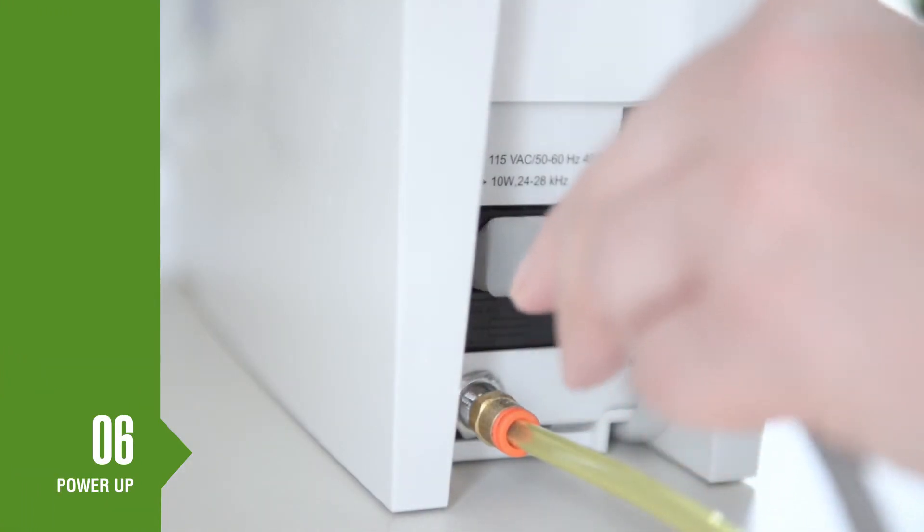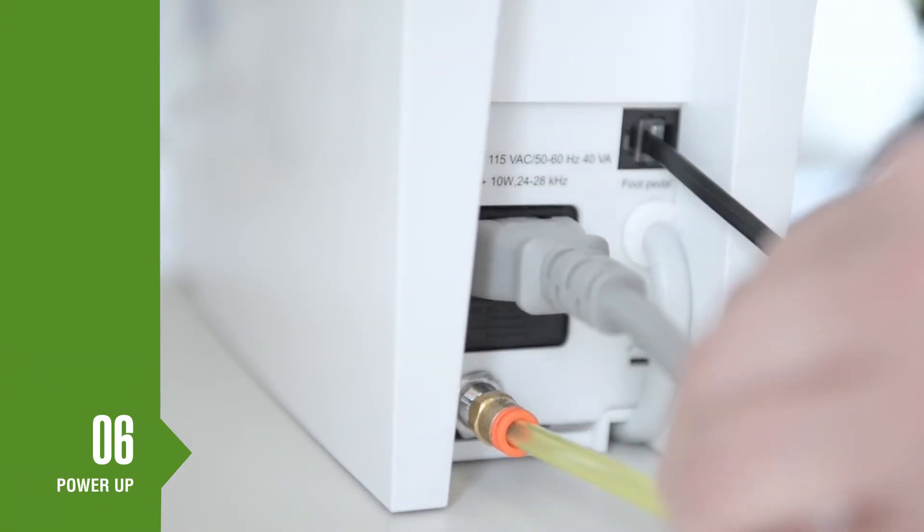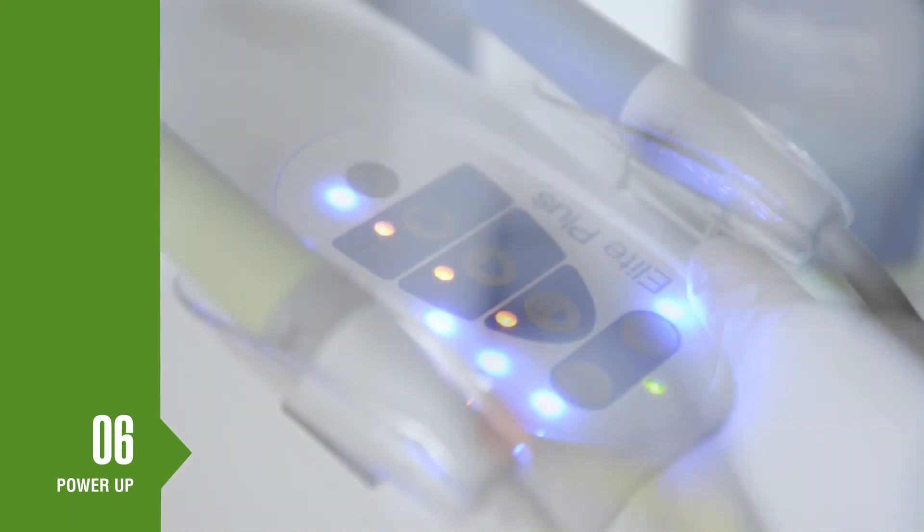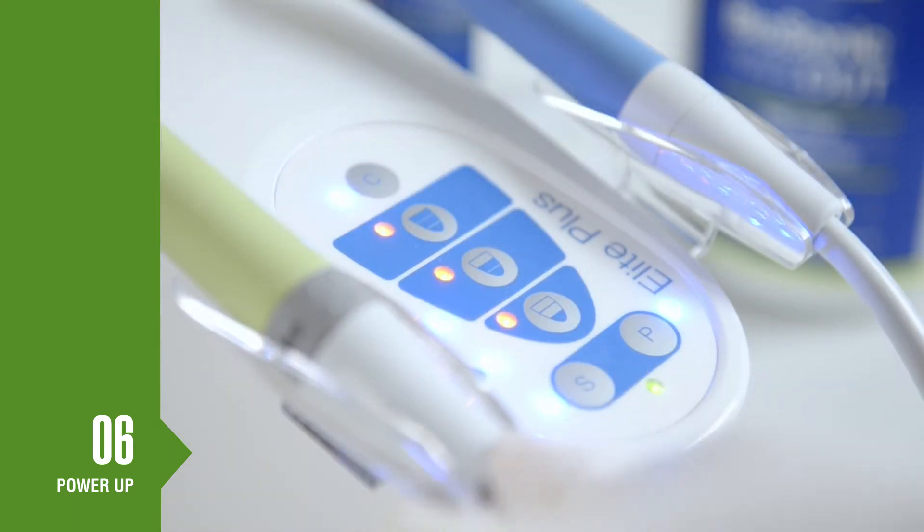To complete setup, plug one end of the power cord into the back of the unit and the other to the GFCI power outlet. All indicator lights will illuminate for a short time.